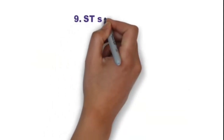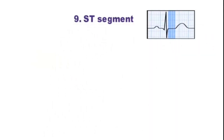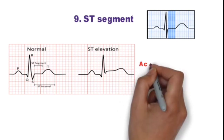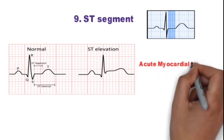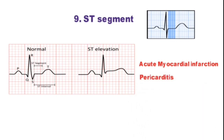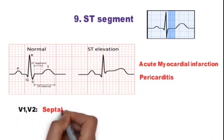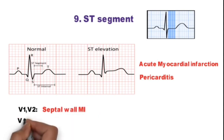Step 9 is ST segment - the flat isoelectric section of ECG between the end of S wave and the beginning of T wave. In this ECG, you can see ST elevation, which could be due to acute myocardial infarction or pericarditis. ST elevation in V1-V2 indicates septal wall MI.